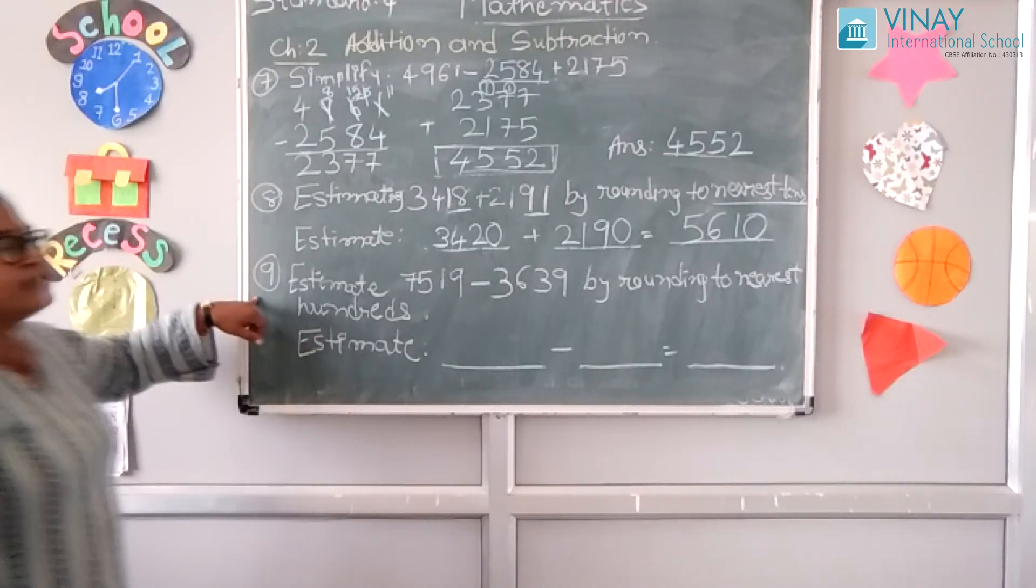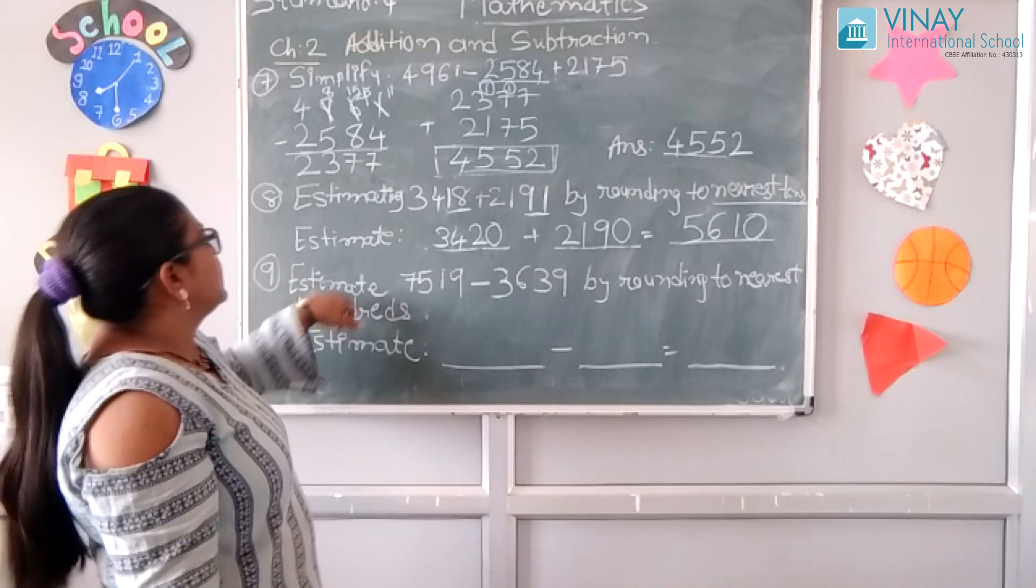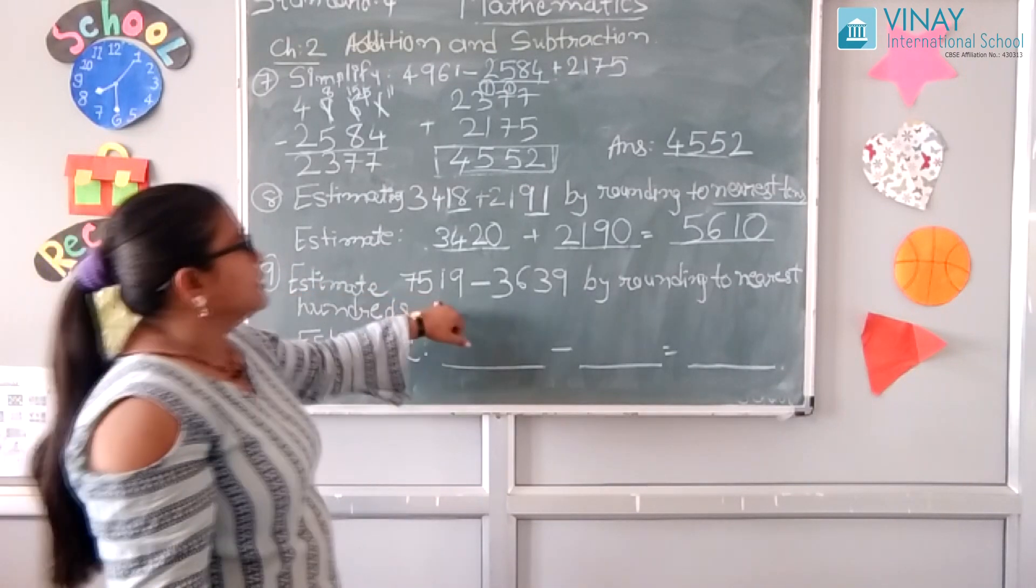Next question, it is for subtraction. Let's see, estimate this number by rounding to the hundreds. We have to round to hundreds, that's why we've underlined the hundreds and the remaining numbers.